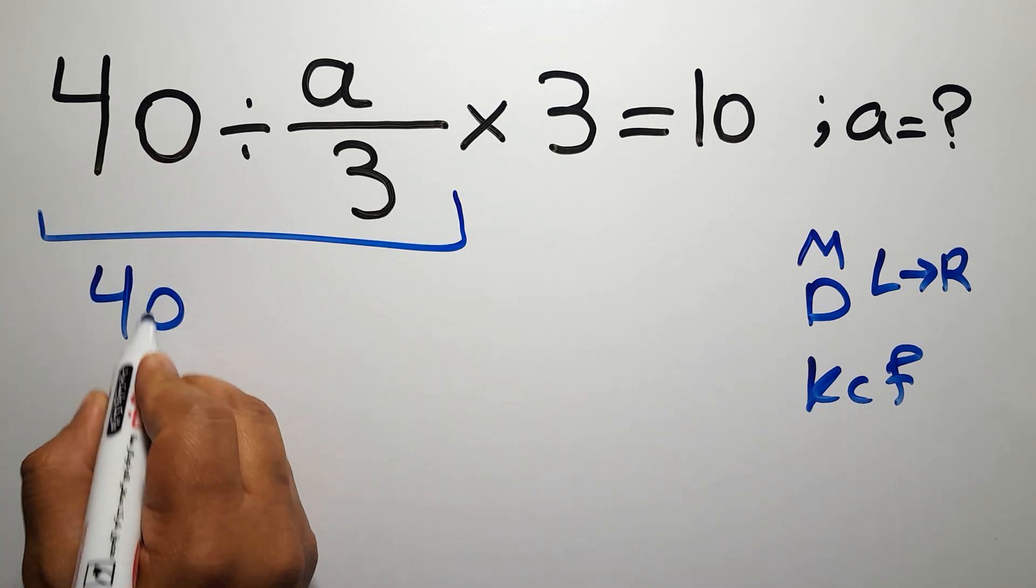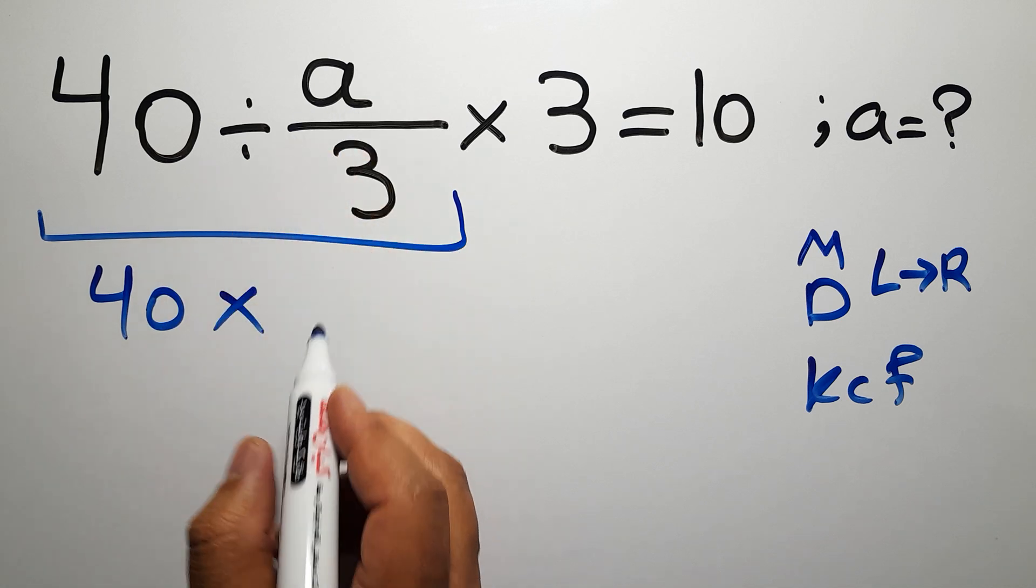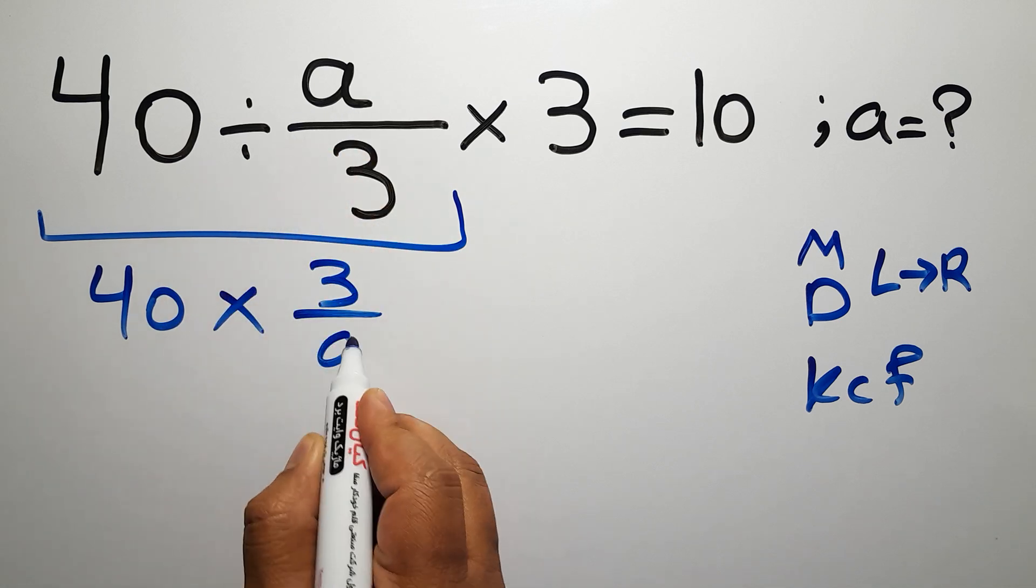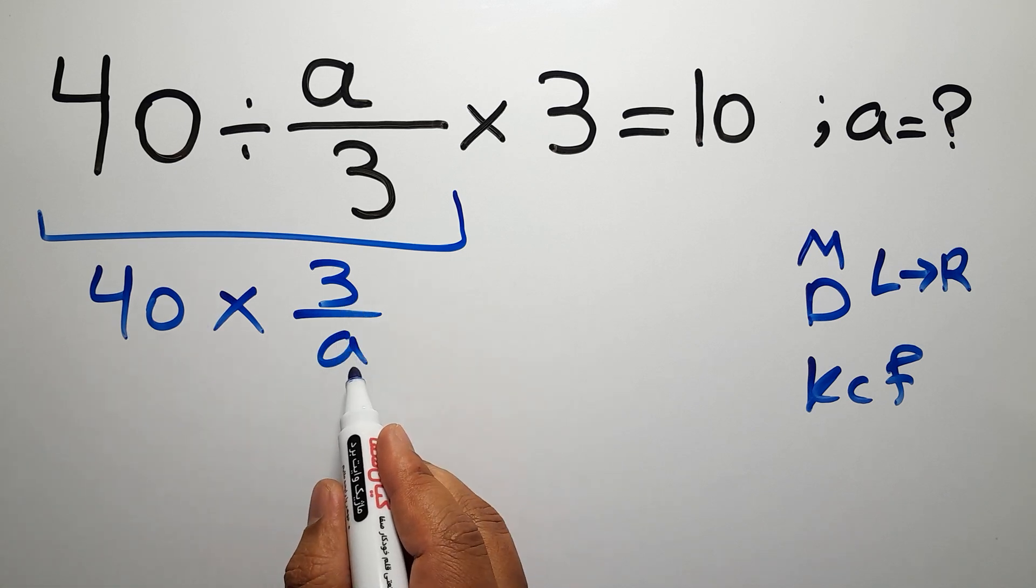So we have 40 times 3 over a, times 3, equals 10.